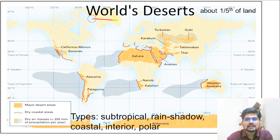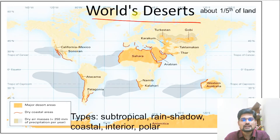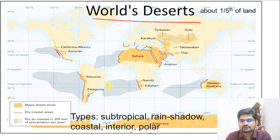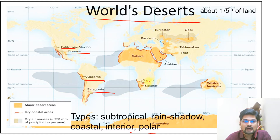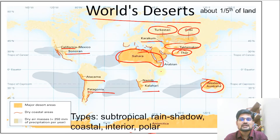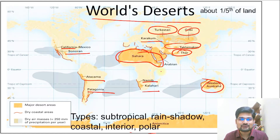Deserts exist across all continents in subtropical, rain shadow, coastal, interior, and polar types. Major deserts include Sonoran, Atacama, Patagonia, Namib, Kalahari, Sahara, Karakum, Turkestan, Gobi, Taklamakan, Thar, and the Western Australian Desert. In all these deserts, wind is a major agent of erosion and deposition, forming aeolian landforms.